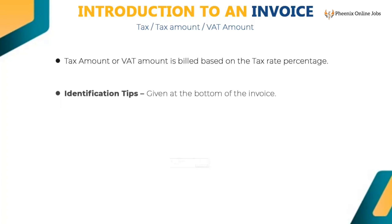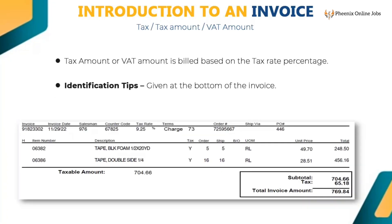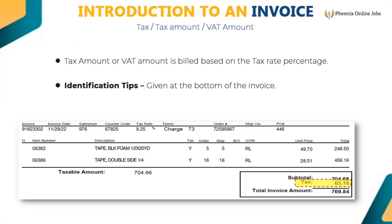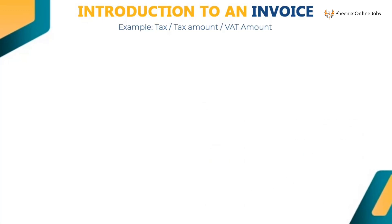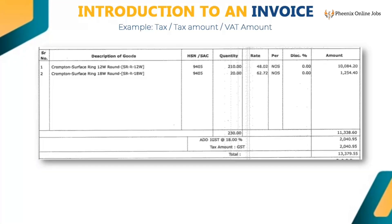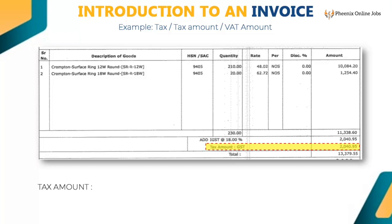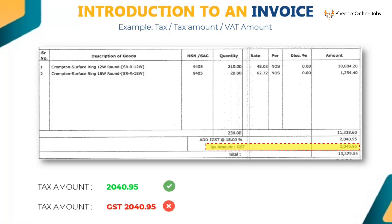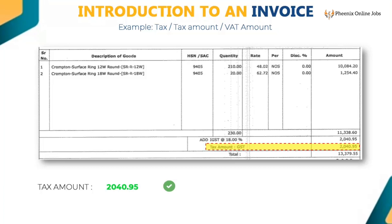Tax amount or VAT amount is billed based on the tax rate percentage. It is given at the bottom of the invoice or below the subtotal or net amount. Key only the numeric value — 2040.95 is the tax amount for this example. Do not key the word 'tax amount.' If 'tax' or 'tax amount' is already populated, then remove those words.